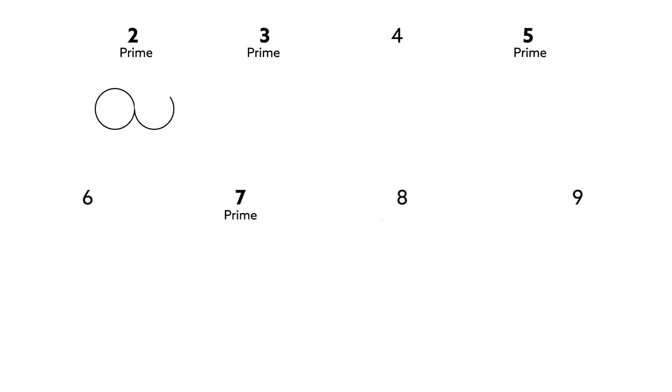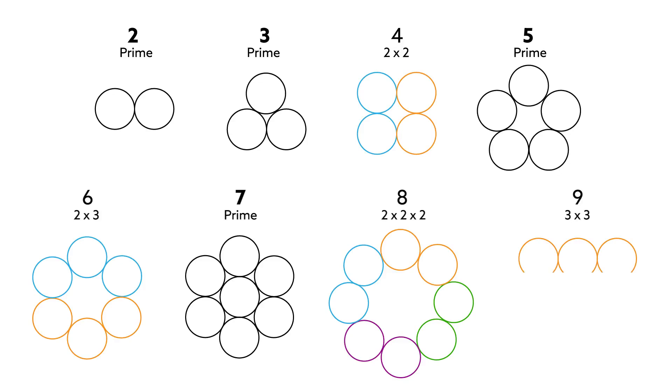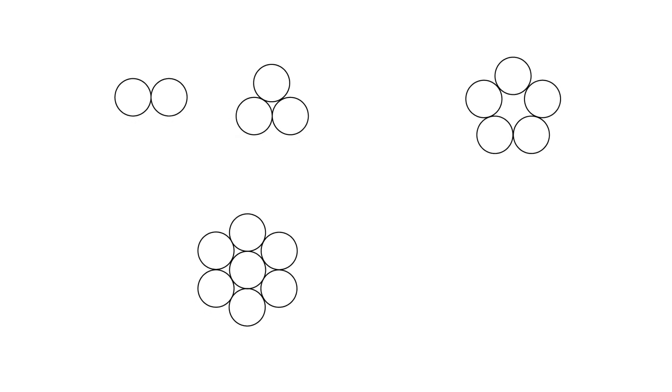Prime numbers are the building blocks of all numbers. Divisible only by one and themselves, they can be multiplied together to generate every natural number. As such, primes have fascinated mathematicians since antiquity, particularly whether and how these numerical atoms themselves are structured.